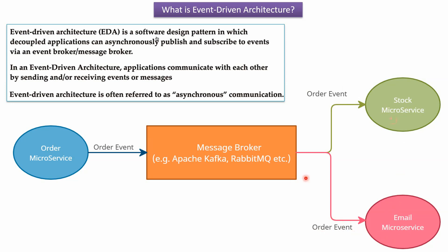In this architecture, the order microservice, stock microservice, and email microservice are decoupled applications. They are communicating with each other by sending and receiving messages via the message broker.